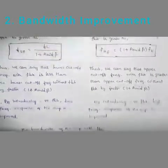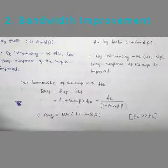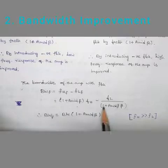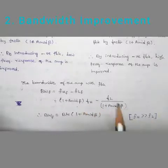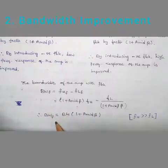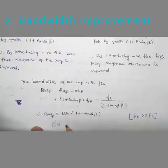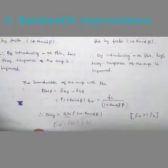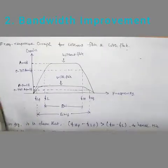For bandwidth calculation: BW_F equals f_HF minus f_LF, which equals (1 plus A_mid·beta)·f_H minus f_L/(1 plus A_mid·beta). Since f_H is much greater than f_L, the second term is eliminated, giving BW_F approximately equals (1 plus A_mid·beta)·BW. The frequency response graph shows gain on the y-axis and frequency on the x-axis, comparing responses with and without feedback.